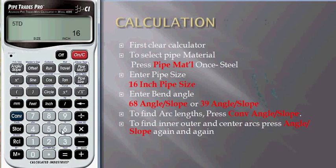Press 6, press 8, press Angle of Slope. To find the arc lengths, just press Convert and Angle of Slope. So we need to find arc length: TO equals 16 and 3/16 inch.